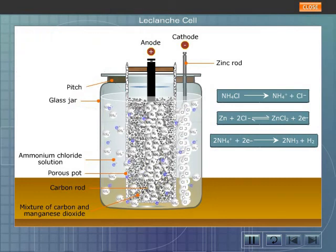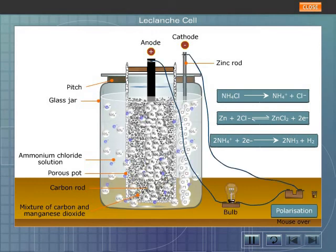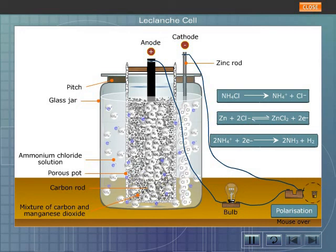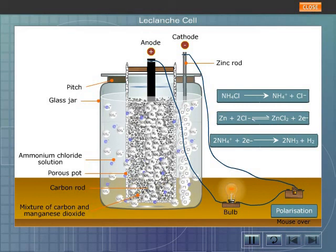The hydrogen gas is oxidized by manganese dioxide to form water, and polarization is prevented. Now if an external copper wire is connected to the electrodes, the electrons will move from the cathode to the anode, generating electricity.